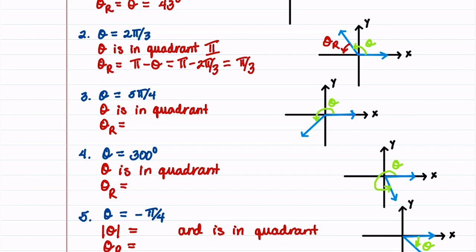In our third problem, theta is 5 pi over 4, which places theta in quadrant 3. This gives our reference angle theta sub r equal to theta minus pi, which is 5 pi over 4 minus pi, giving us pi over 4.